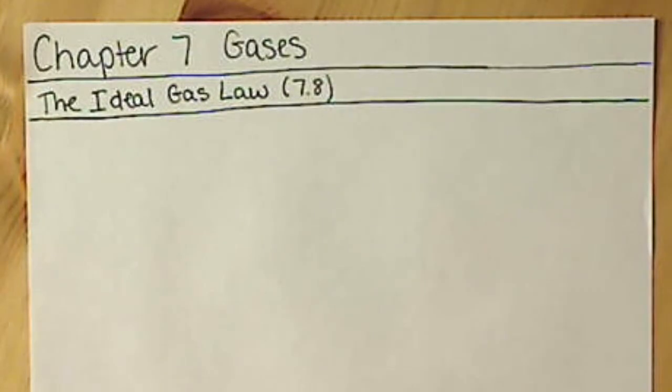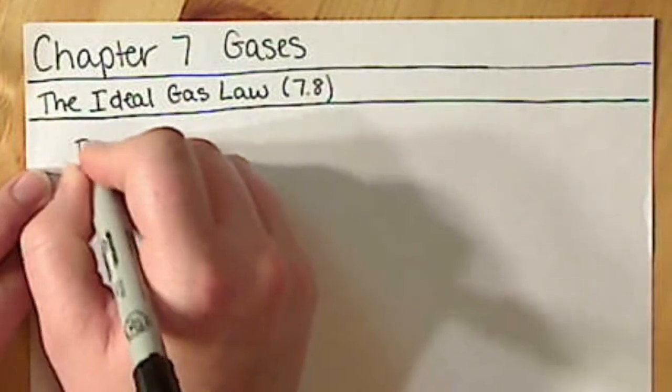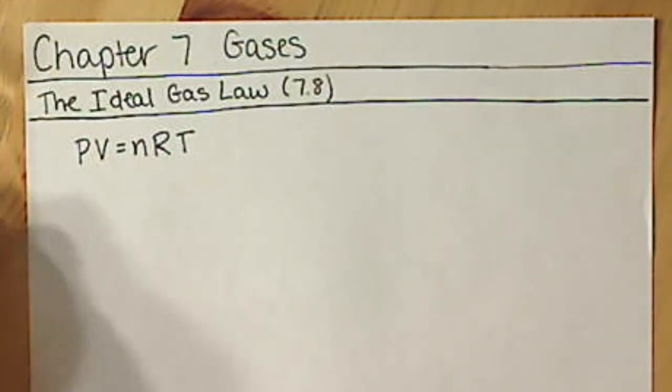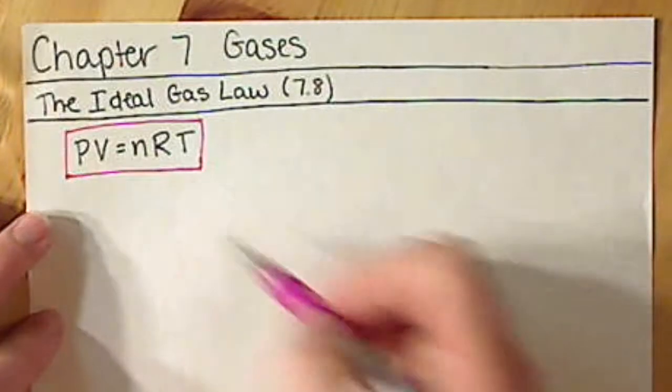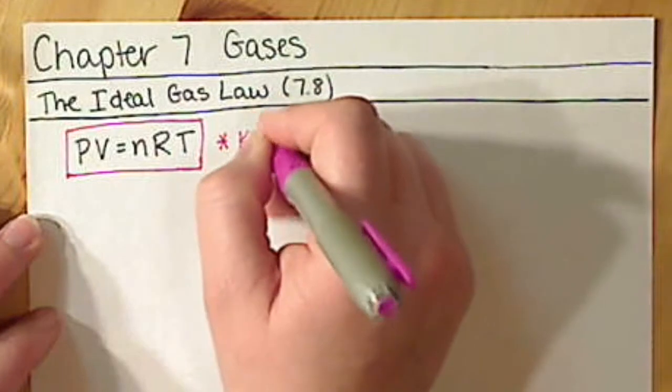So the ideal gas law combines all four properties of our gases: pressure, volume, temperature, and the amount of gas in moles. When we put those together, we get this PV equals NRT. A lot of people like to nickname this Puvnert. That is probably what I will refer to it, although its technical name is the ideal gas law. Puvnert is just a little bit more fun, and it helps you remember what values are in there. This is definitely an equation that you are going to want to know.